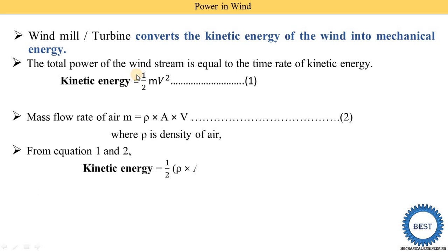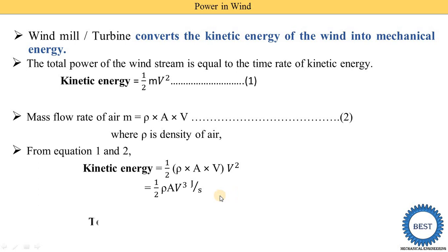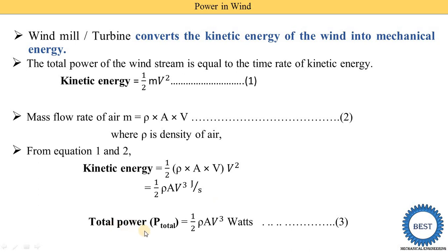Substituting m = ρAV into the kinetic energy equation gives: KE = ½ρAV·V² = ½ρAV³. The unit of this kinetic energy is joules per second, which we can also write as watts. This is the basic equation for total power, denoted as P_total = ½ρAV³.